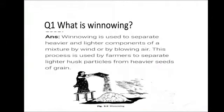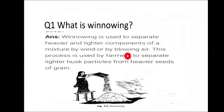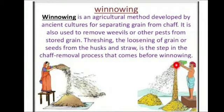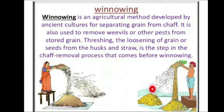Another separating method is winnowing. Winnowing is used to separate heavier and lighter components of a mixture by wind or by blowing air. Farmers use this process to separate lighter husk particles from heavier seeds of grain. The farmer drops the grains gently through a special device at a certain height, and with the help of wind, the husk or chaff gets separated from the heavier grains.